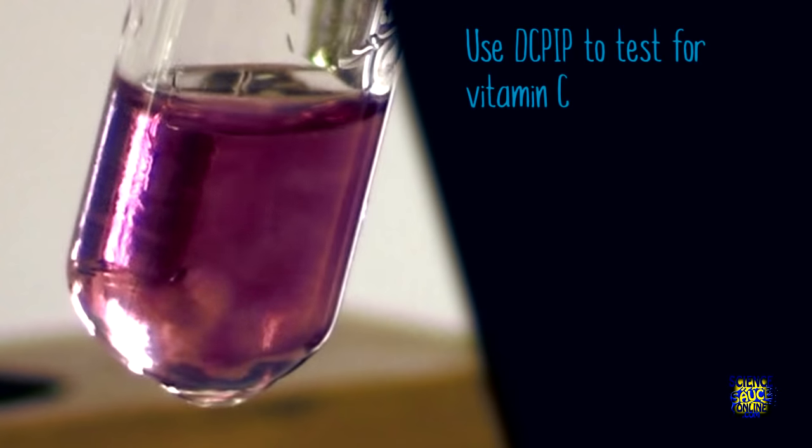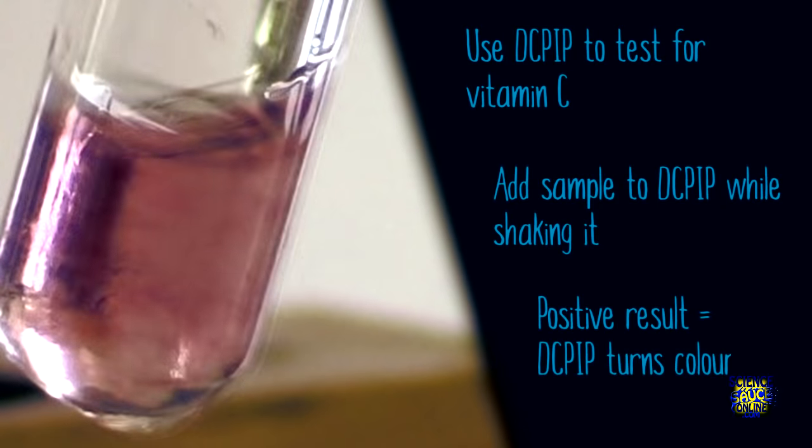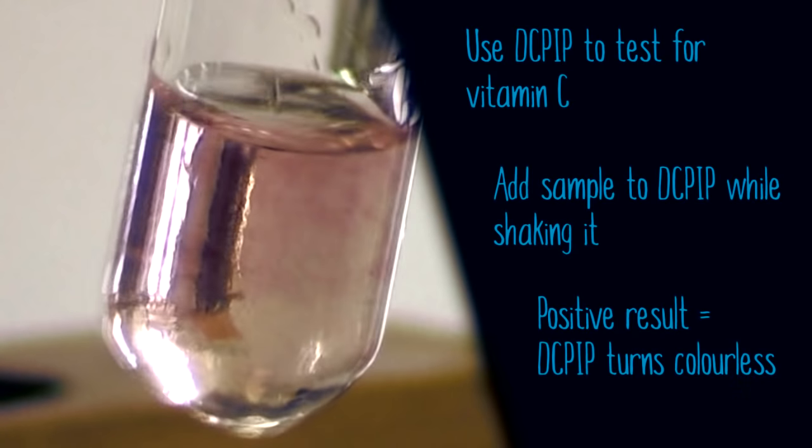So we use DC-PIP to test for the presence of vitamin C. We add our sample to DC-PIP while shaking it and the DC-PIP will turn colorless if vitamin C is present.